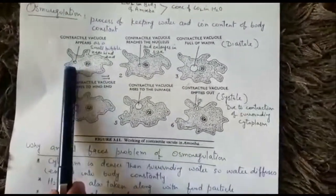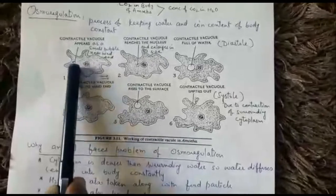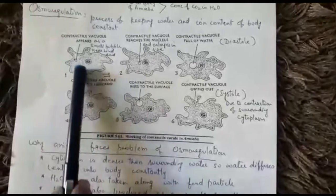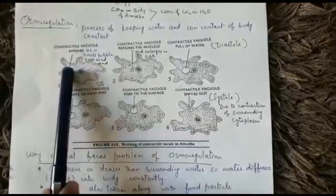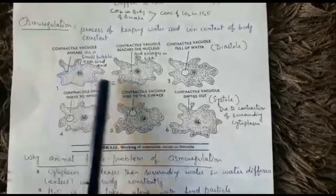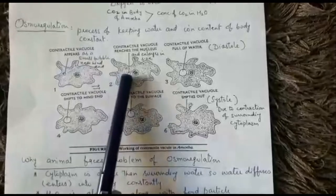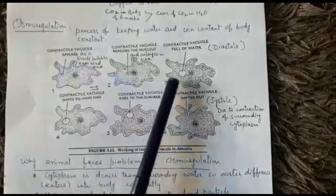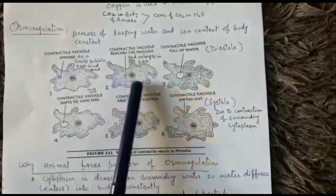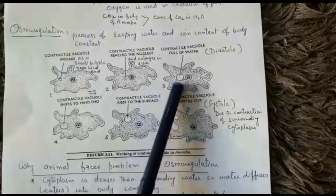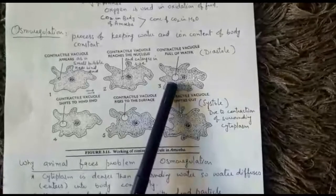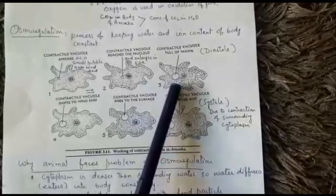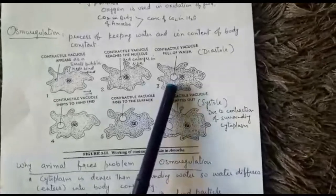The tubules and vesicles surround the vacuole and water accumulates into it, so it grows in size. This growth phase of the contractile vacuole is known as diastole. When it is fully formed and loaded with water, it will naturally be heavier in weight.